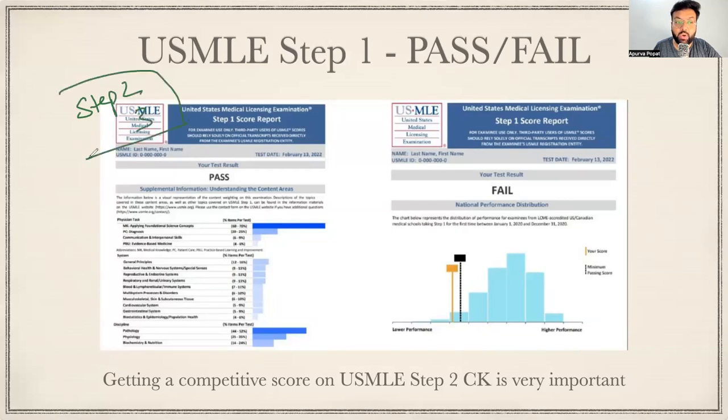These are the only two exams which have some objective data - the Step 2 score as well as Step 3 score. These are the three-digit objective scores where a program director can differentiate two students objectively. So now the burden of score is definitely on USMLE Step 2 and Step 3 exam.